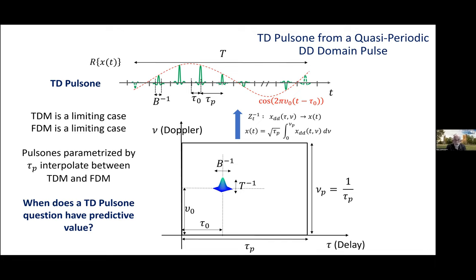So, TDM, time division multiplexing, that's a limiting case. As the delay period tau_p grows, the time domain pulses located at tau_0 plus n times tau_p, they move towards plus or minus infinity and only the time domain pulse at tau_0 remains.